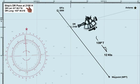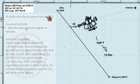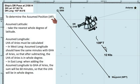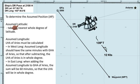This video focuses specifically on how the assumed position is determined and its practical application. Here is the procedure for determining the assumed position. For the assumed latitude, take the nearest whole degree of latitude. Since our DR latitude is 1 degree, 55.7 minutes north, the whole degree is 2, so our assumed latitude is 2 degrees north.